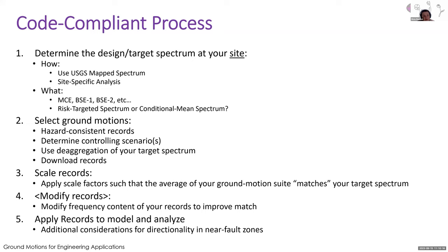Once you have your target spectrum, you want to select hazard-consistent records. You determine the controlling scenarios using deaggregation, then download the records and scale them. You may optionally modify the records so that the mean of your ground motion spectra has some relationship to your target spectrum. Modifying records can improve the match depending on the type of modifications. The very last step is to apply the records to the model and analyze, with additional considerations in the near field for fault normal and fault parallel components.